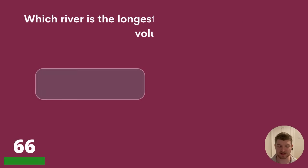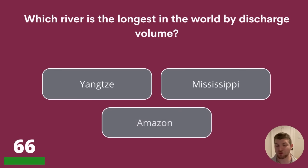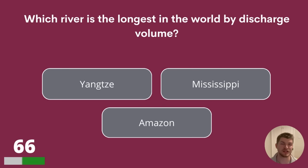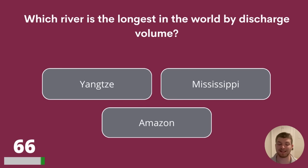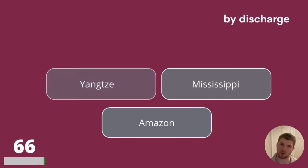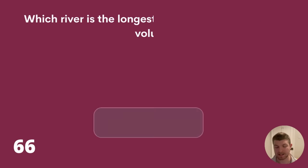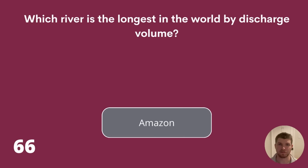Question 66. Which river is the longest in the world by discharge volume? Yangtze, Mississippi, or Amazon? We learned earlier that the Nile is the longest river in the world, but the longest by discharge volume is the Amazon.